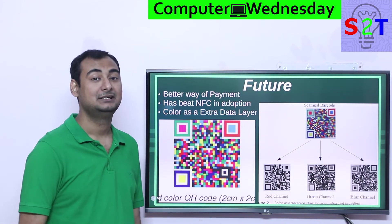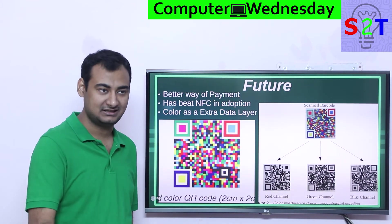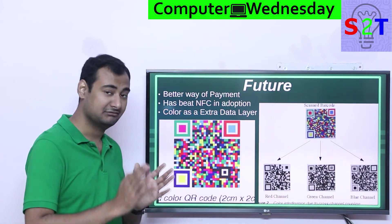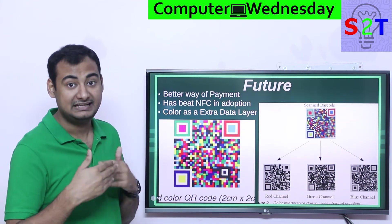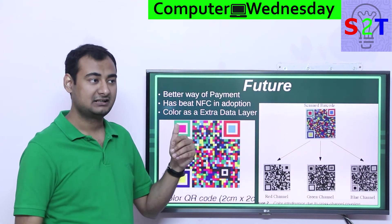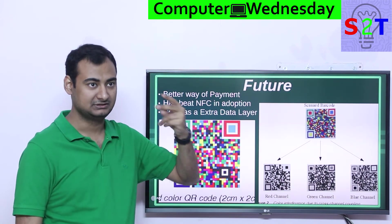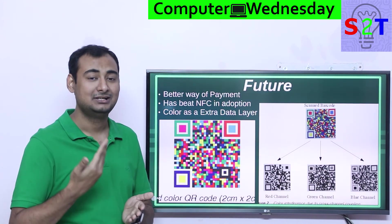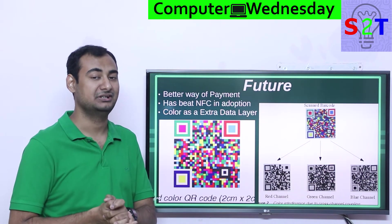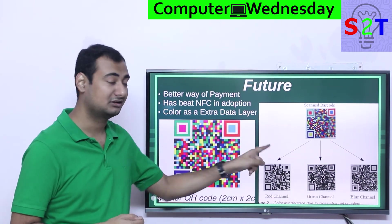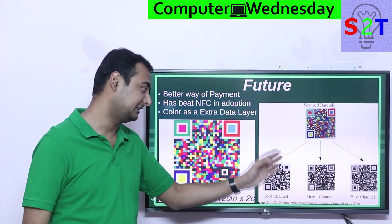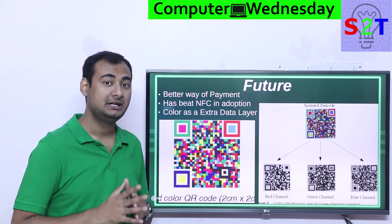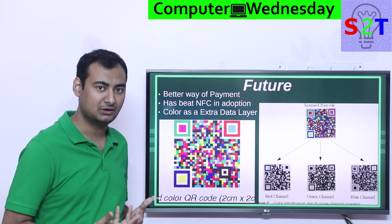This color-channel approach isn't expected to appear next year, but people are working on it. A similar concept uses gradations - complete black, gray, and white - giving extra data points, though more lighting-dependent. Color is preferred because even in low light, red looks red, green looks green, and blue looks blue. There's a lot of potential, and a lot of money is being poured into increasing QR code capacity, so it's not going away anytime soon. NFC may not see widespread adoption for a while, but QR codes will survive much longer.